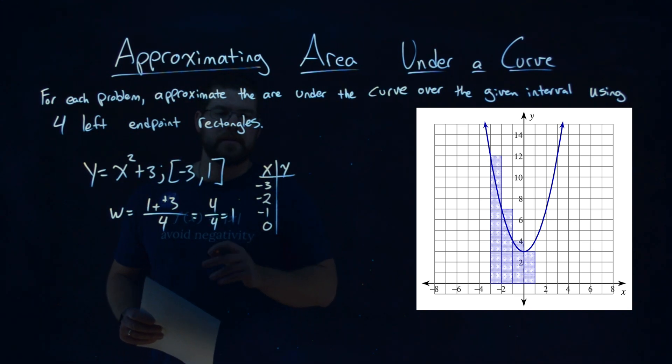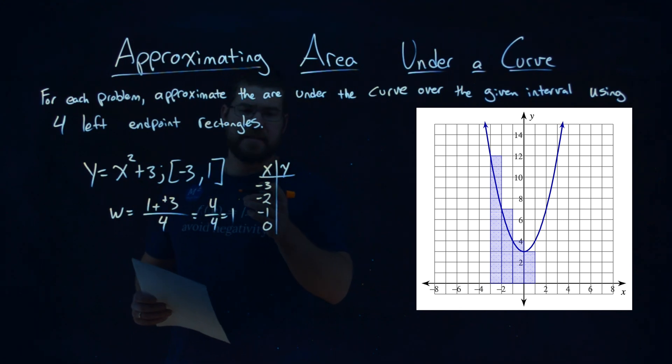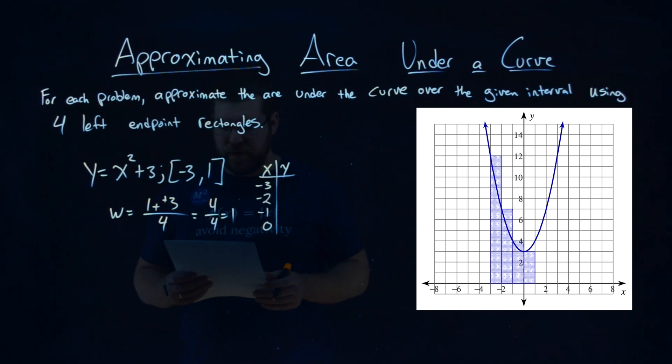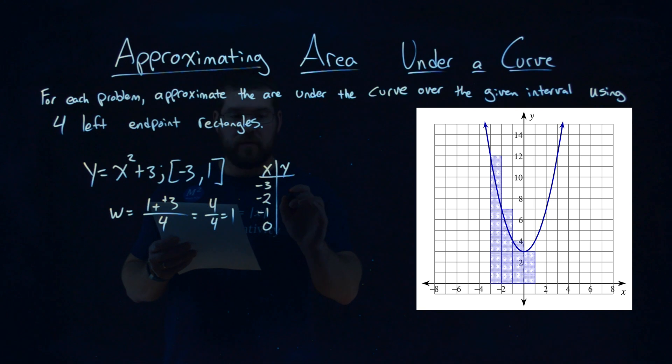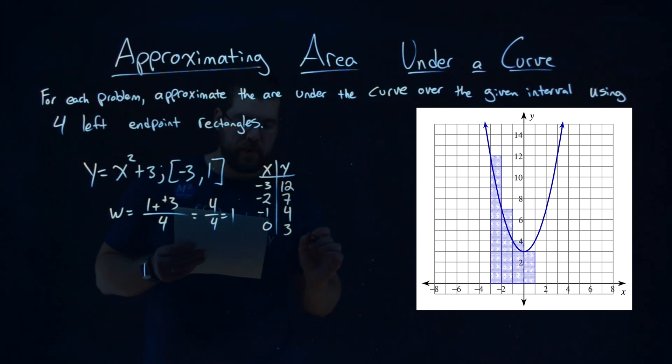We need to find the corresponding y values. So what I do is I take that negative 3 and plug it back into my original equation. Negative 3 goes in, outputs a 12. Negative 2 goes in, outputs a 7. Negative 1 goes in, we get a 4. And when 0 goes into our original equation, we get a 3.